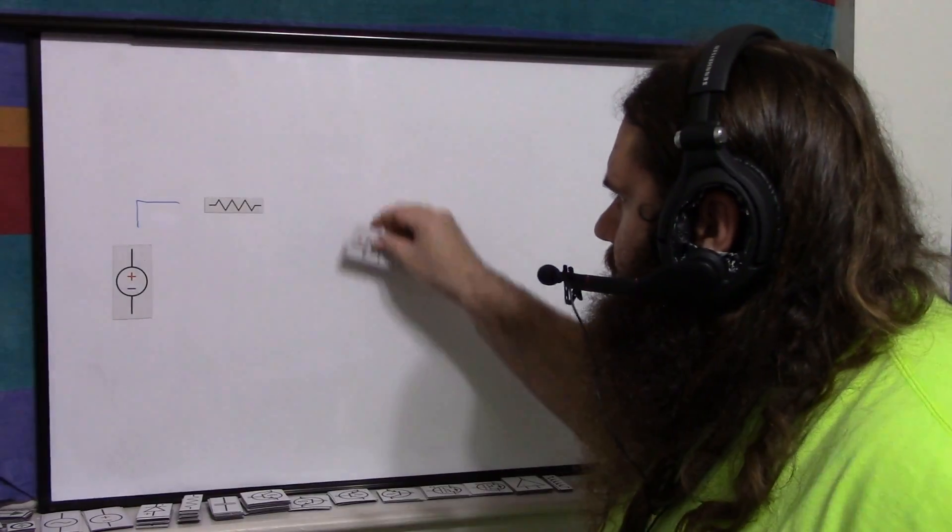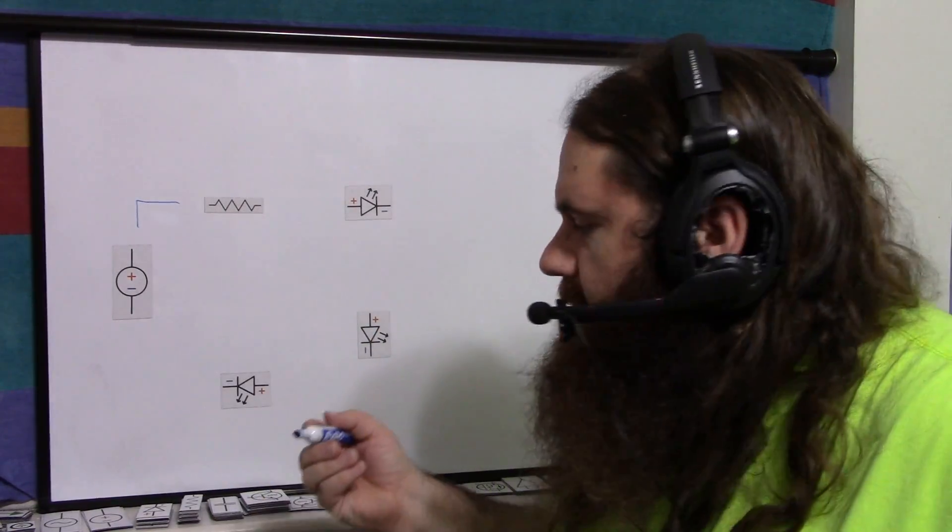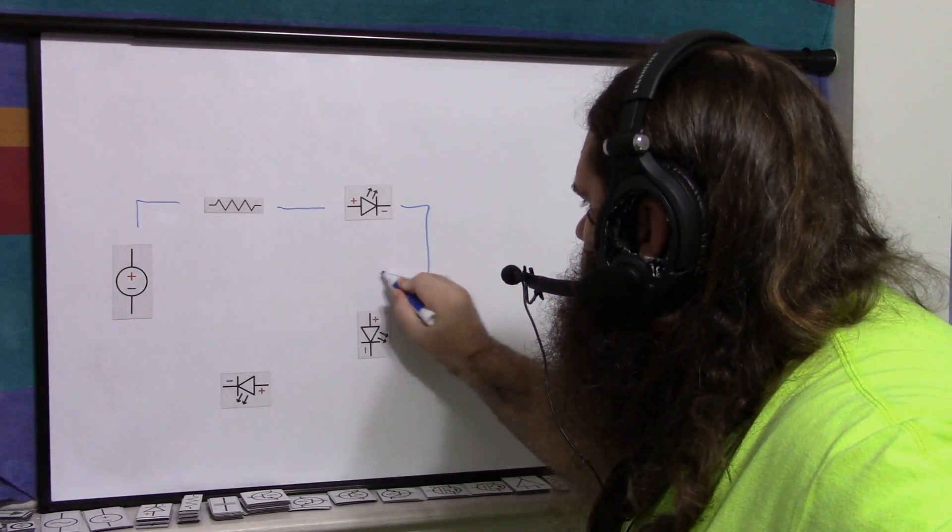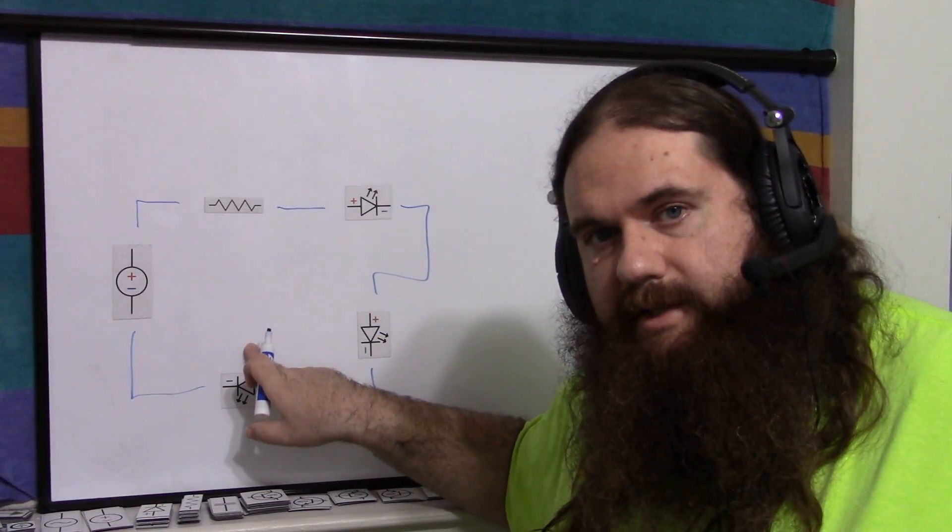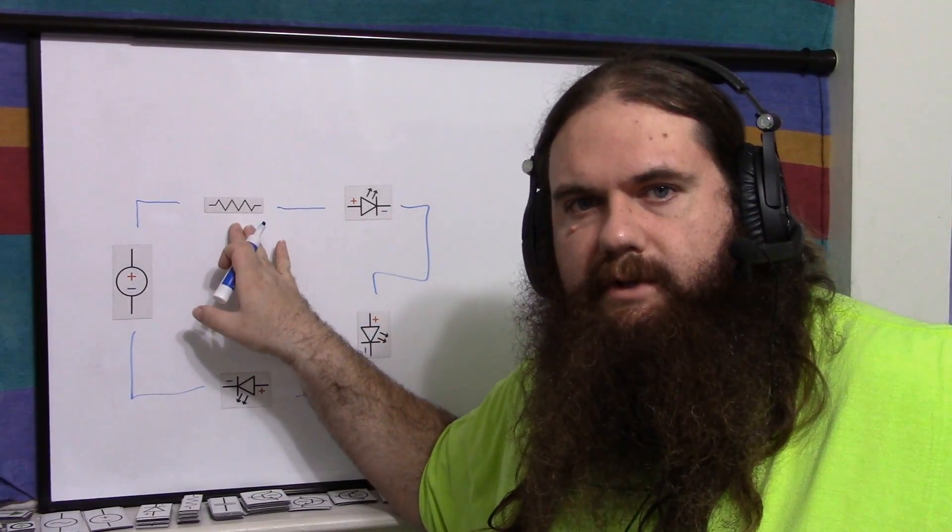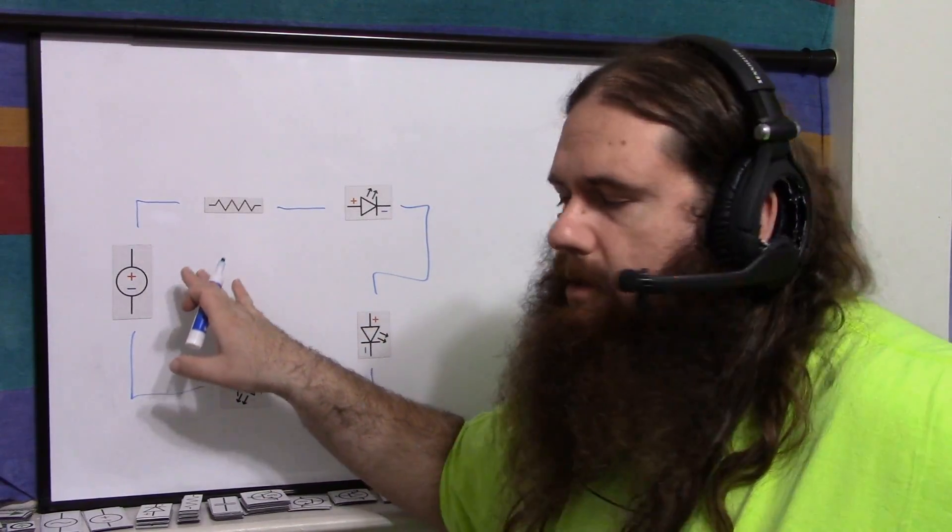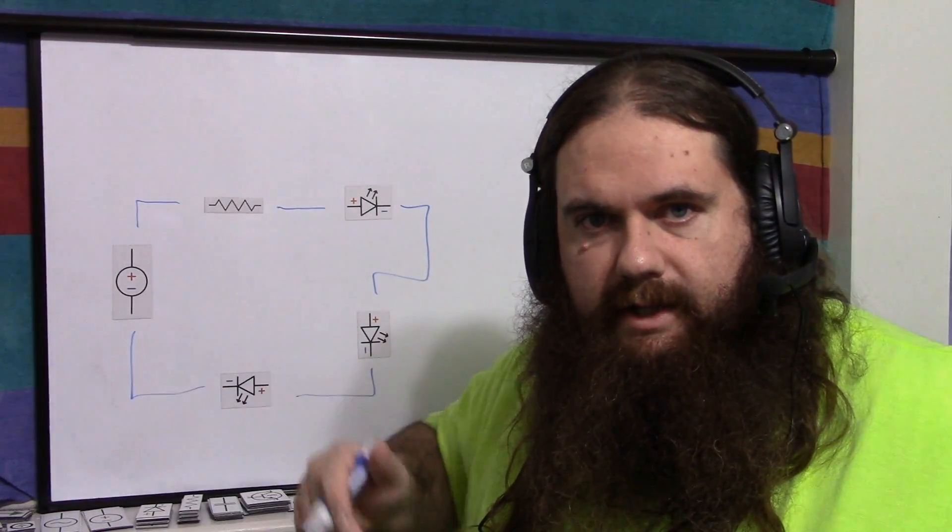How much current determines how bright. If you want to connect multiple LEDs in series, it's exactly the same. You need just one resistor. Power supply minus this drop, minus this drop, minus this drop, assuming your power supply is big enough, equals the voltage across the resistor. Ohm's law. And because it's in series, the current is the same through all of the LEDs.